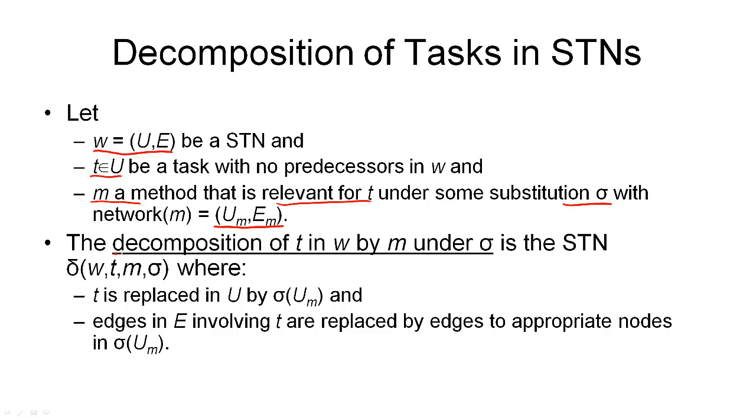And this method itself will have a network consisting of nodes and edges. Then we can define the decomposition of T, the task T, in the network W, by method M, under our substitution sigma as follows. The first thing we have to do is we replace our task T by the instantiated network tasks that come from our method. So from our original network W, we remove the task T and in its place we put all those tasks that are in UM and instantiate those with the substitution sigma. That is how we modify the tasks in the network. And then we also have to modify the edges in the network. And the edges we have to replace are exactly those edges in E that involve T. We have to replace them by edges to appropriate nodes in our new set of nodes, sigma of UM.